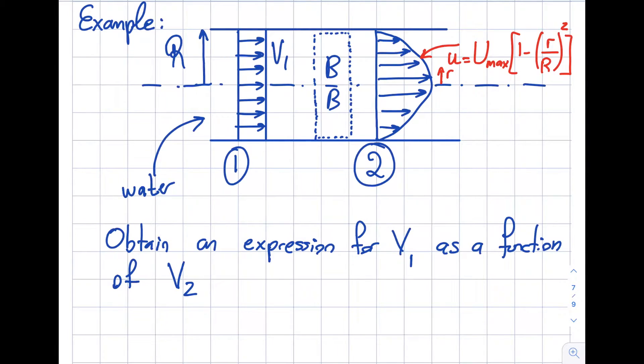So this is the correct velocity profile that is given to me. This is a viscous flow velocity profile. This is inviscid flow velocity profile. My question is asking me obtain an expression for V1 as a function of this U_max.